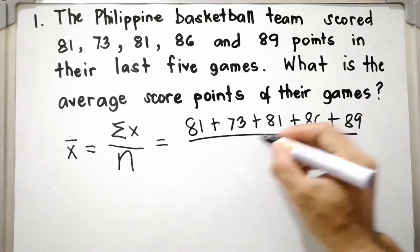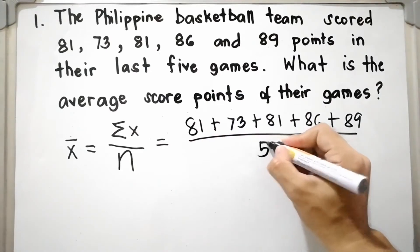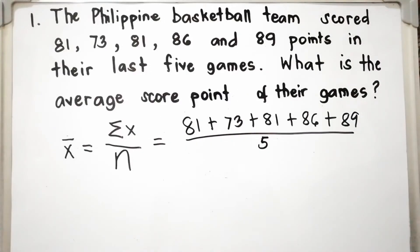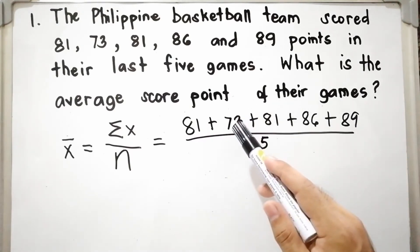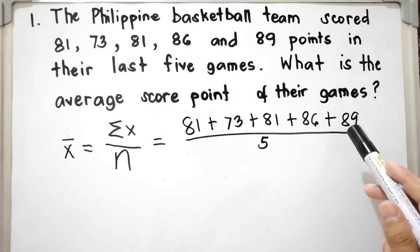Divided by 1, 2, 3, 4, 5. n is equal to 5. First, let's add the same tens digits. 80 plus 80 plus 80 plus 80, or multiply it by 4. That is 320. Then add 70. That is 390.